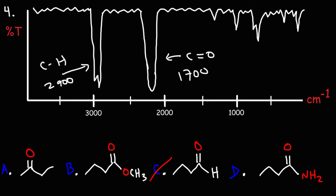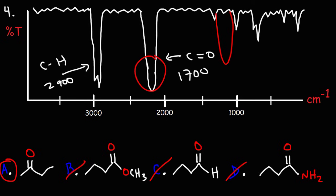Looking at answer choice B, we have an ester. An ester would have a C-O signal somewhere between 1000 and 1300. Since we don't have that signal, we know we don't have an ester. So by elimination, the answer has to be a ketone — because this is all that will be present for a ketone: the alkane C-H stretch and the carbonyl C=O stretch at 1700. So A is the correct answer choice for this problem.